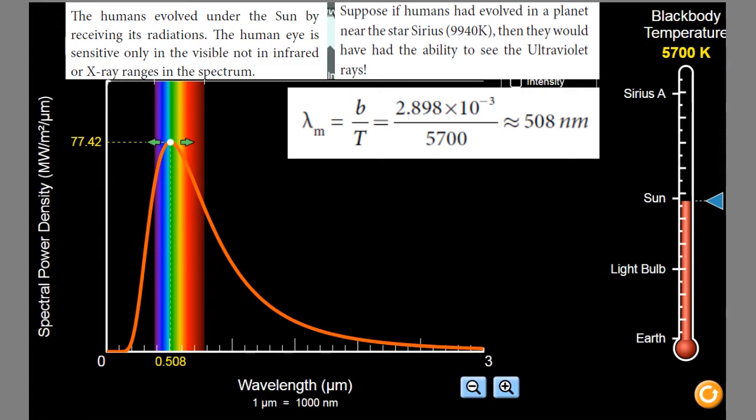2.898 into 10 to the power of minus 3 divided by surface temperature of the sun is 5700 Kelvin. Substitute, you will get the answer as 508 nanometer. 508 nanometer is nothing but 5080 Angstrom unit, or you can say in terms of micrometer also, 0.508 micrometer. It's nothing but the green light. The green color light is emitted with maximum intensity from the surface of the sun.